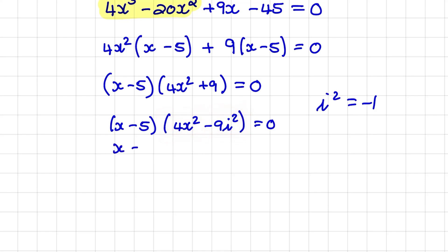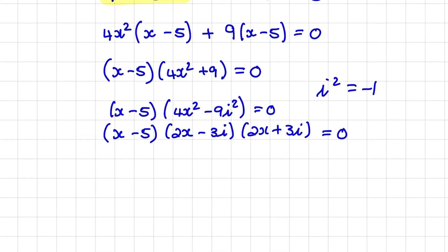So if I factor further I have x minus 5 times 2x minus 3i times 2x plus 3i equal to 0. And I set each set of brackets equal to 0 in order to find the values of x.